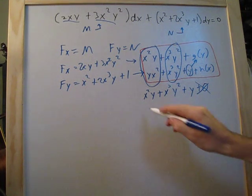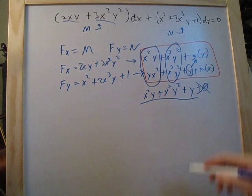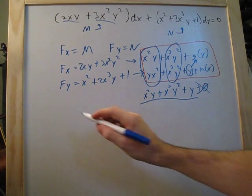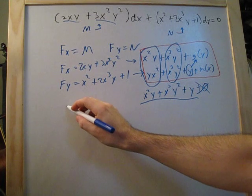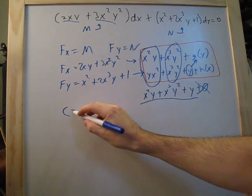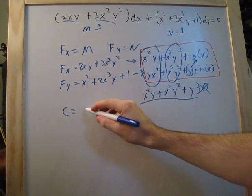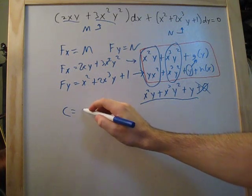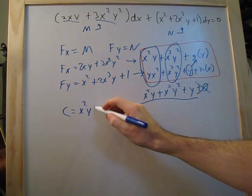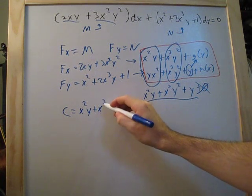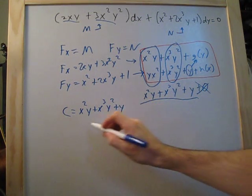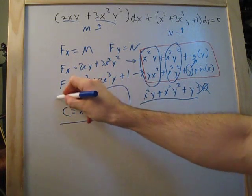We now have our equation. For the final answer, we place c on the opposite side: c equals x²y plus x³y² plus y. And that is our answer.